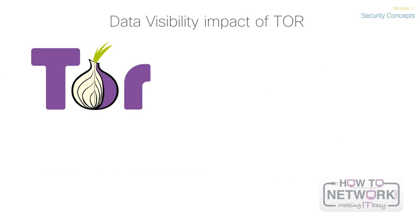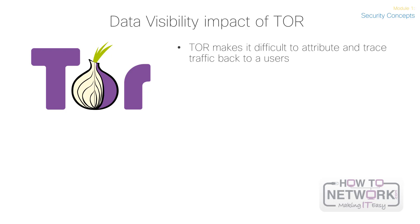So what's the impact of Tor on data visibility? The use of Tor also makes security monitoring and incident response more difficult, as it is difficult to attribute and trace traffic back to the user. There are various types of malware that use Tor to cover their own tracks.